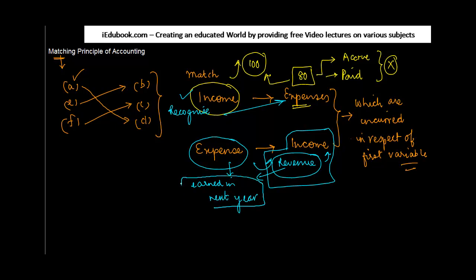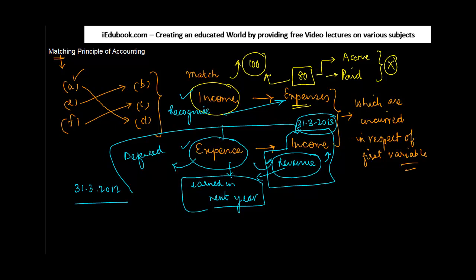Let's say I incur an expense for financial year ending 31-3-2012, but I know that the revenue in respect of this expense is going to come, this income is going to come, in the year 31-3-2013. Then when I prepare my profit and loss account, I am not going to book this expense. Why? Because the corresponding income is also supposed to come in the next year.